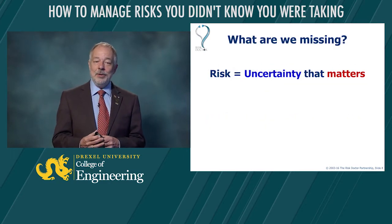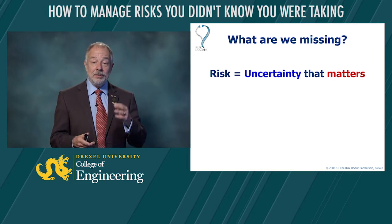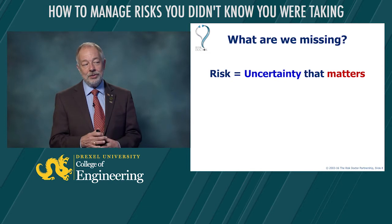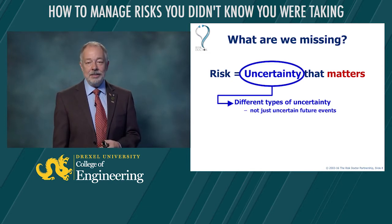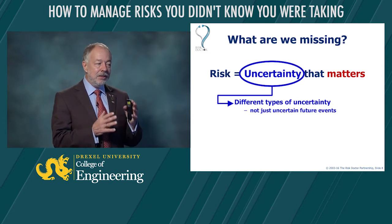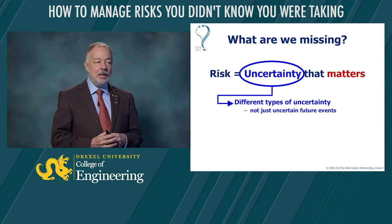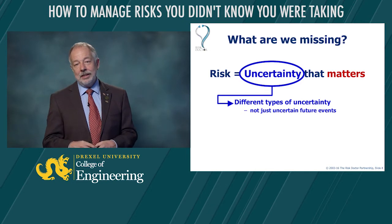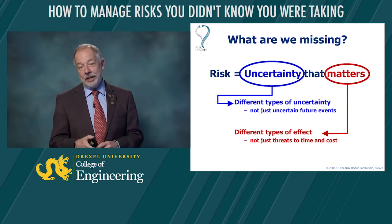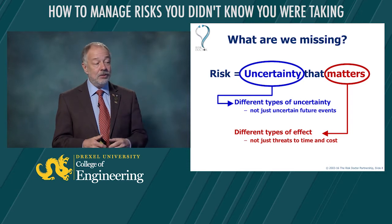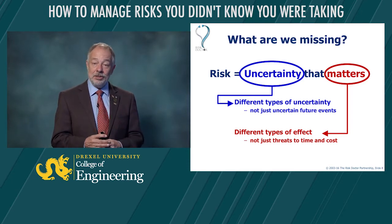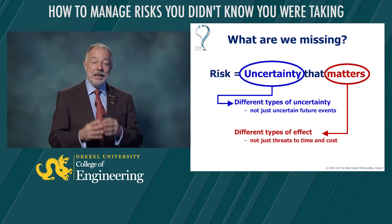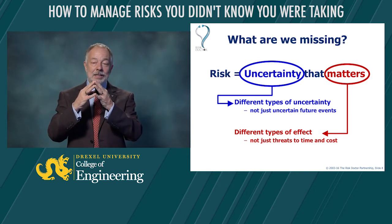So what are we missing if we think that all risks are only threats — uncertain future events that could have a negative effect on our project budget or schedule? On the uncertainty side, we're missing the fact that there are different types of uncertainty, not just uncertain future events. And on the mattering side, we're missing the point that things matter in different ways, not just bad things that could happen to our time and cost. So we need to expand our thinking about types of uncertainty and types of mattering.